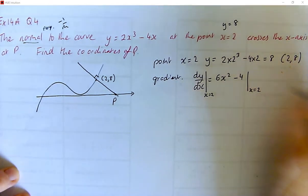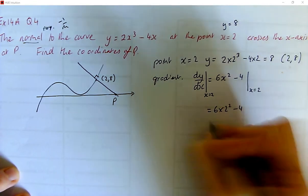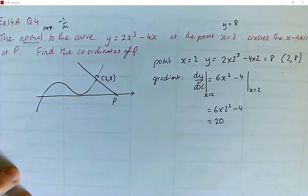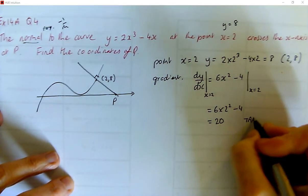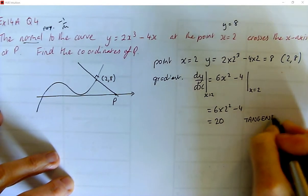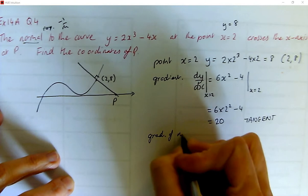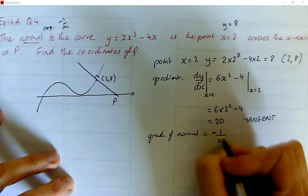So that is going to equal 6 times 2² minus 4. What's that kind of? So that's going to be 20. That's a big gradient. Now, that's the gradient of the tangent. So that means the gradient of the normal is going to be minus 1 over 20.